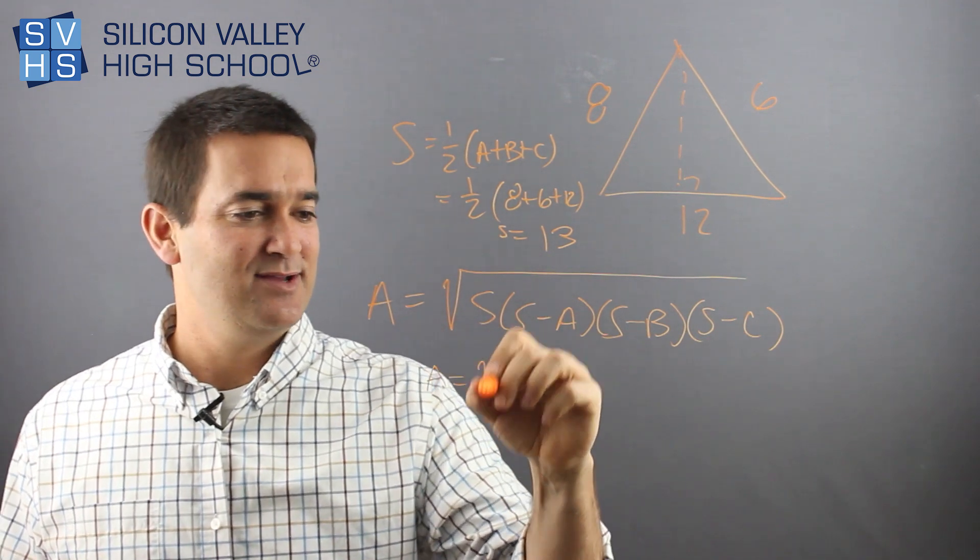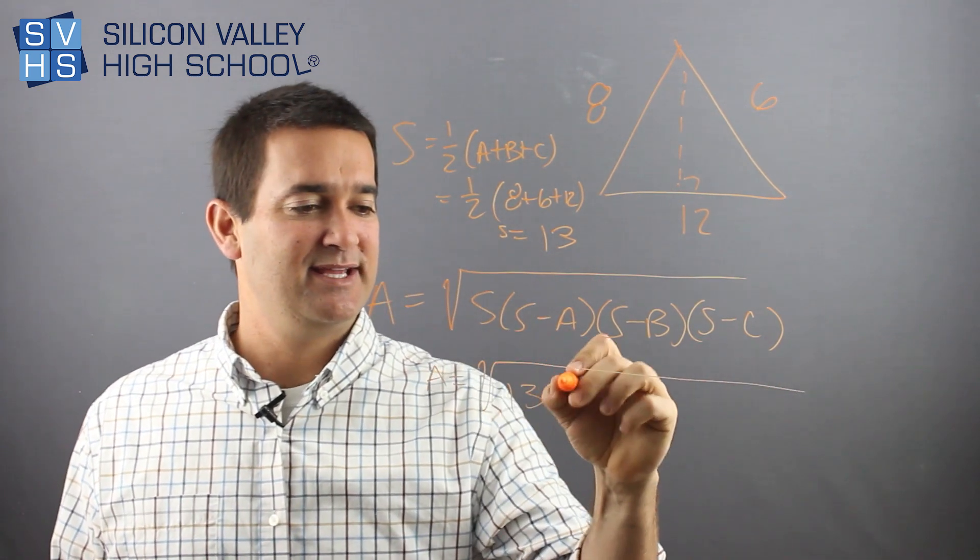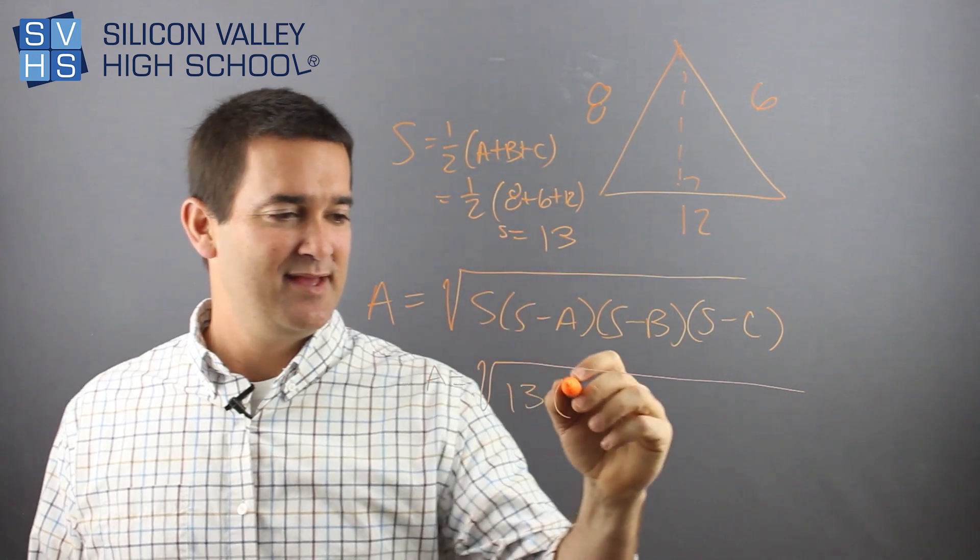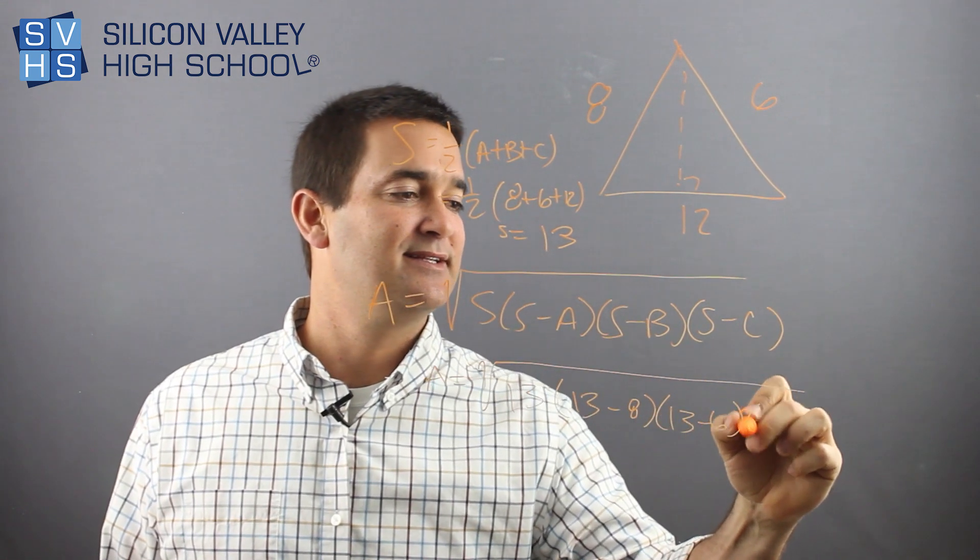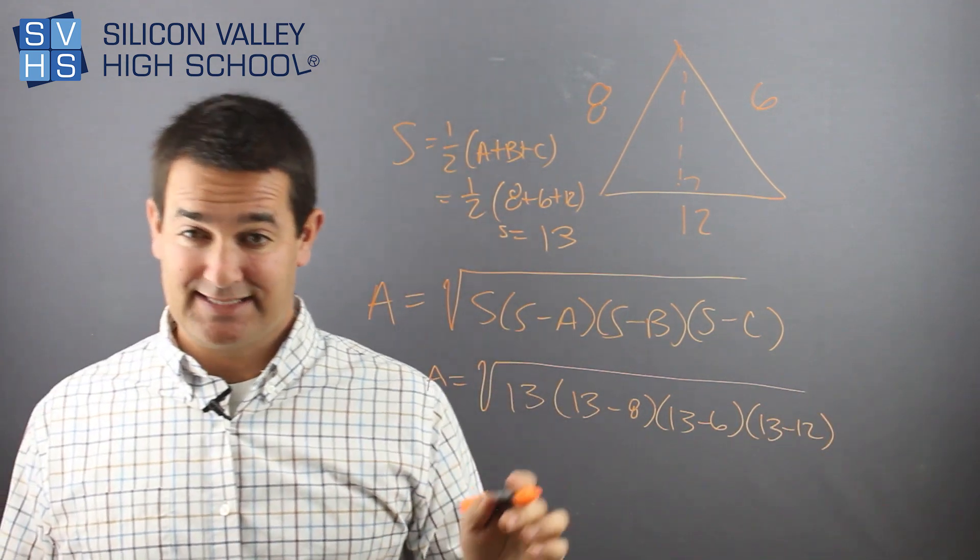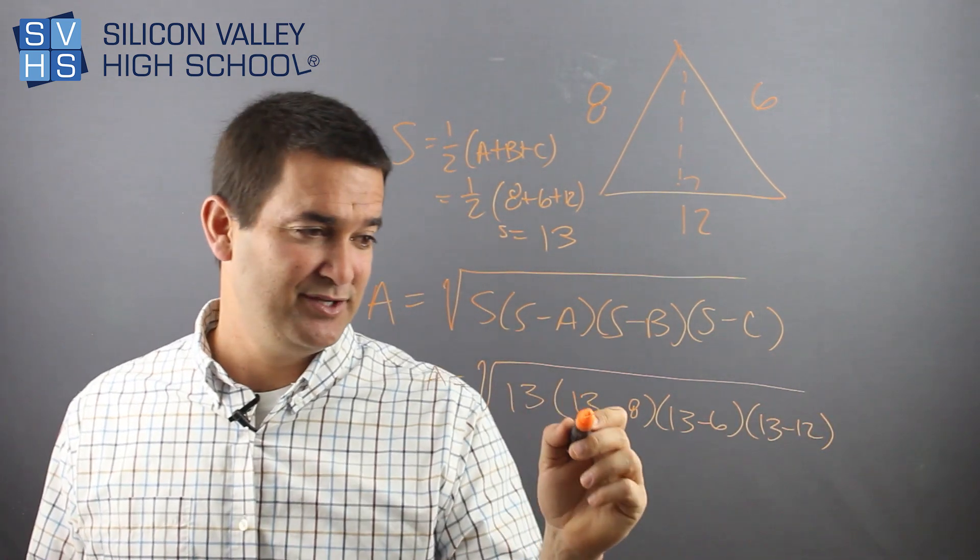Then we just plug this in. Area equals, right, and you have 13 is my S right here. Then I have 13-8 times 13-6 times 13-12, and then do that slowly and surely. Remember, order of operations.